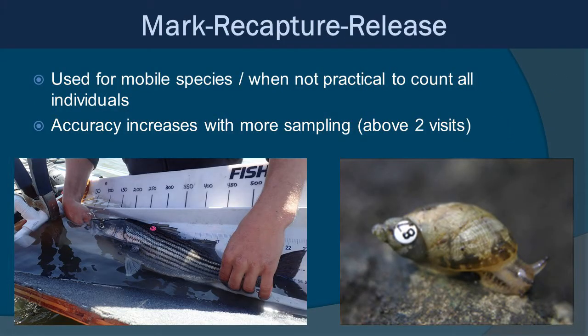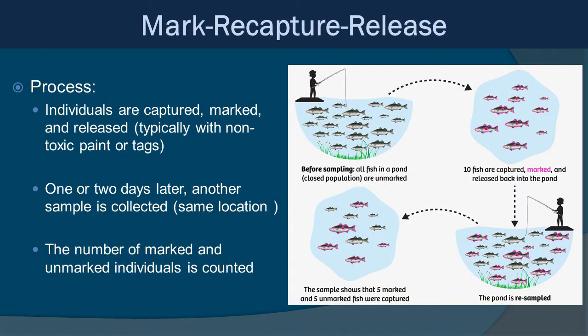One of the first methods we'll look at is the mark-recapture-release method. This is used for mobile species — essentially those that move around — when it's not practical to count all of them. The accuracy here increases the more sampling you actually do, above two different sample sessions. First, you go to a particular site, capture a certain number of individuals, mark them, and release them. This is typically done with non-toxic paint or tags that don't have any ill health effects towards the animal.